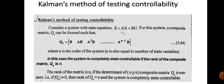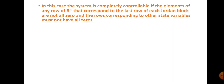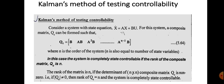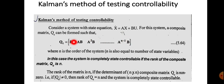Next we go to Kalman's method of testing controllability. The definition of controllability is the same but the test is different. Given the state equation x-dot = Ax + Bu, we form a composite matrix Qc as: Qc = [B  AB  A²B  ...  Aⁿ⁻¹B]. The first element is B, the second is AB, the third is A²B, and so on.